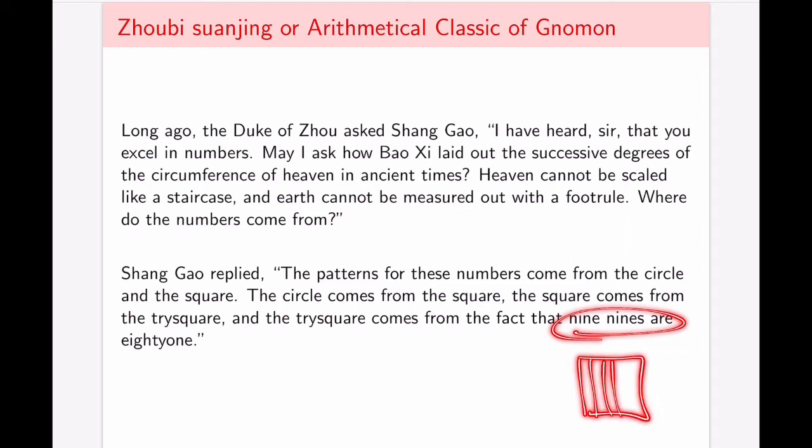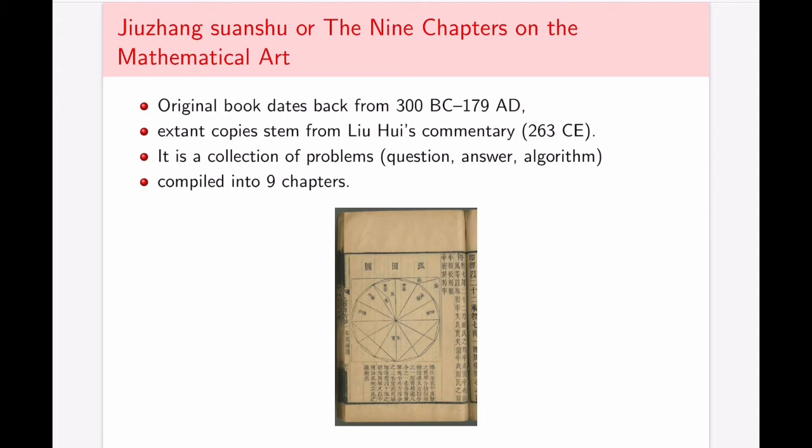This really gets at the root of how the ancient sources portray mathematics with this idea of distinguishing categories, the circle, the square, the tri-square, the numbers, in order to unite them, in order to show what is common to all of these things, and finding common properties.